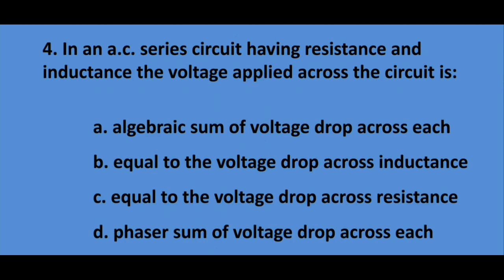Question number four: In an AC series circuit having resistance and inductance, the voltage applied across the circuit is? Answer is option D: Phasor sum of voltage drop across each.